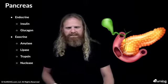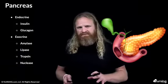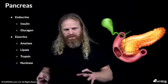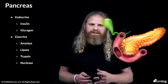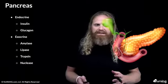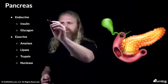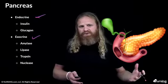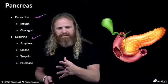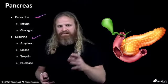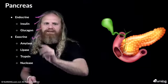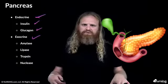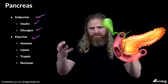Let's talk really quickly about the basic functions of the pancreas. Once you understand how something works, it's much easier to understand what happens when it's not working well. The pancreas is both an endocrine and an exocrine gland. Endocrine means it secretes hormones directly into the bloodstream — those hormones are insulin and glucagon. Insulin decreases blood glucose and glucagon increases blood glucose.